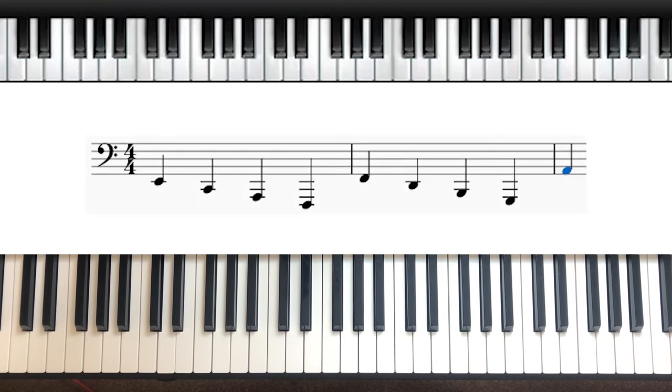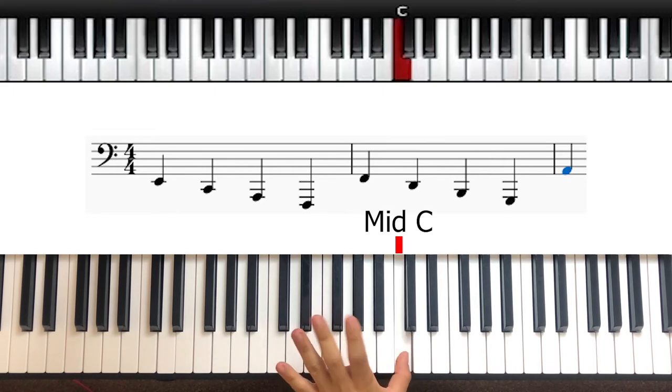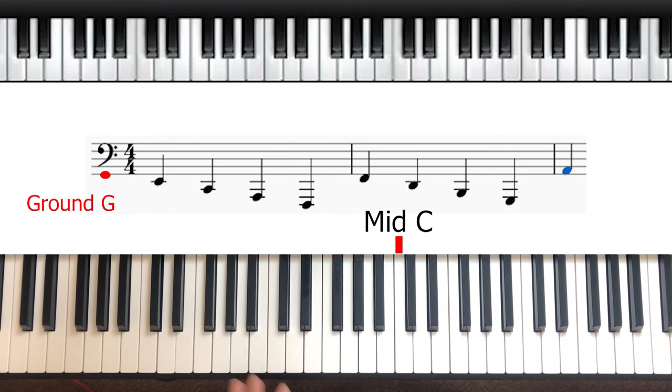And finally, we have the ledger lines underneath the bass clef. Just for reference, I've moved the camera so that this is now middle C. We know that the first line here is ground G, so if we skip our way down through the lines, we can see a familiar pattern.